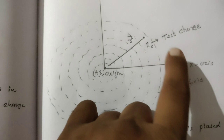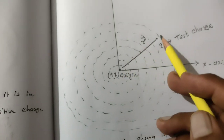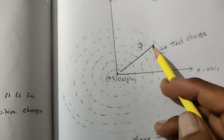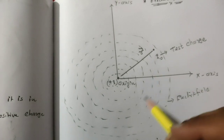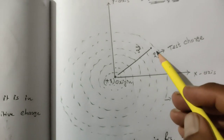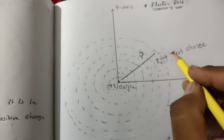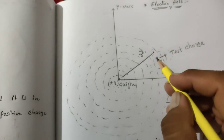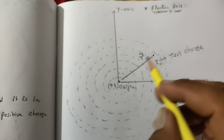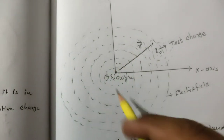At this point we place the test charge q0. The distance between plus Q and q0 is known as r — also known as the position vector. Now remember: while inserting this test charge into the electric field, it may also produce its own electric field, which would disturb the original field. So the magnitude of the test charge should be small — negligible — compared to the original electric charge, so there is no disturbance in the original electric field.